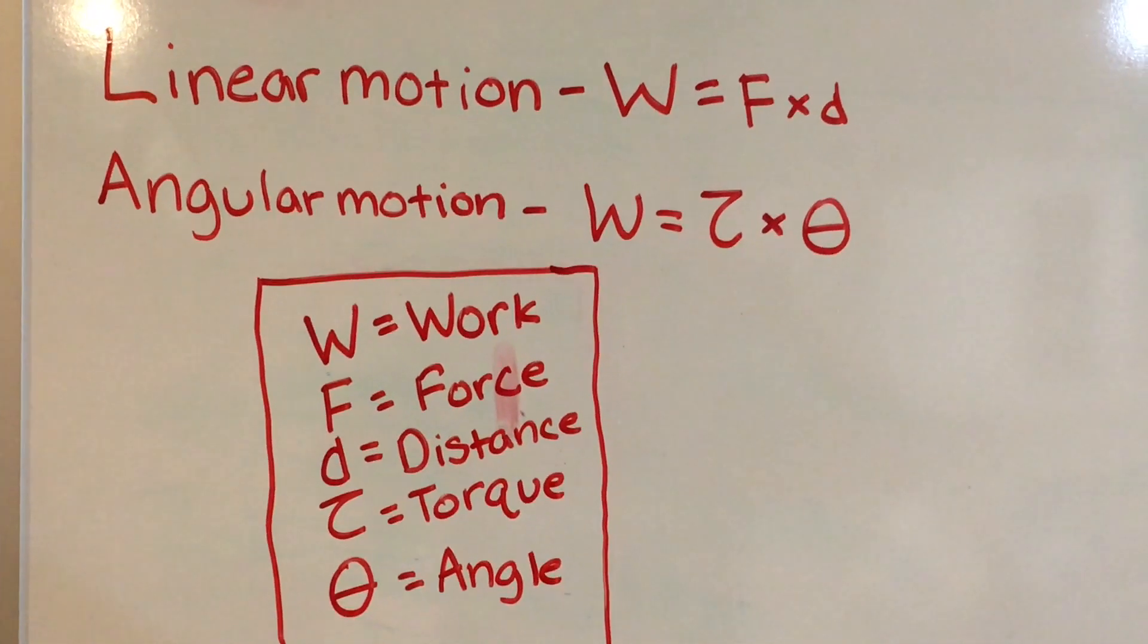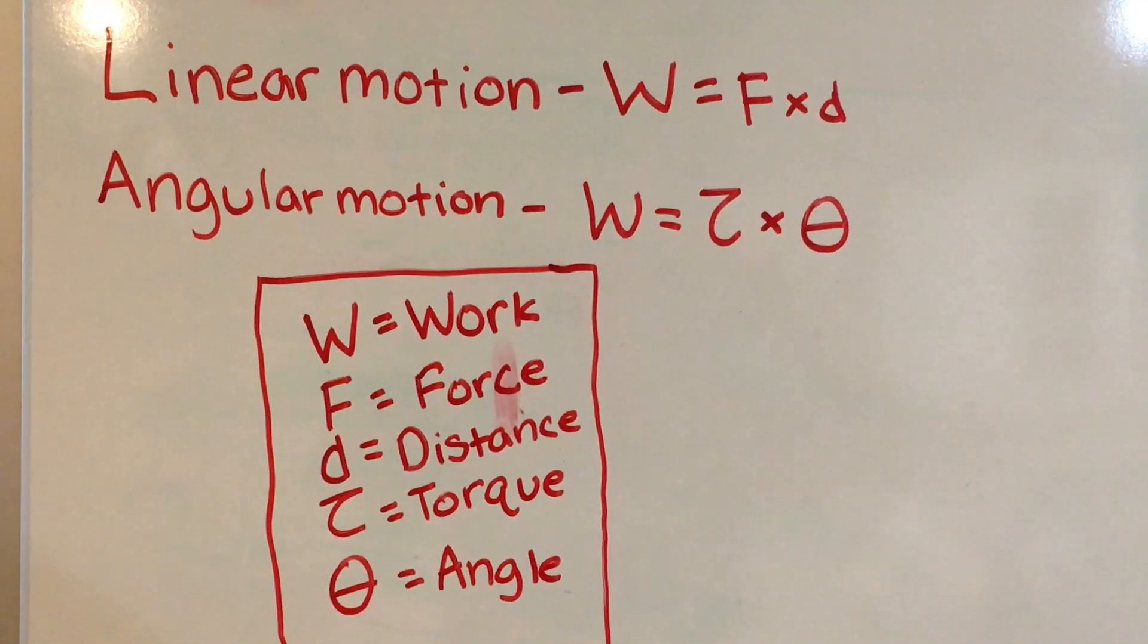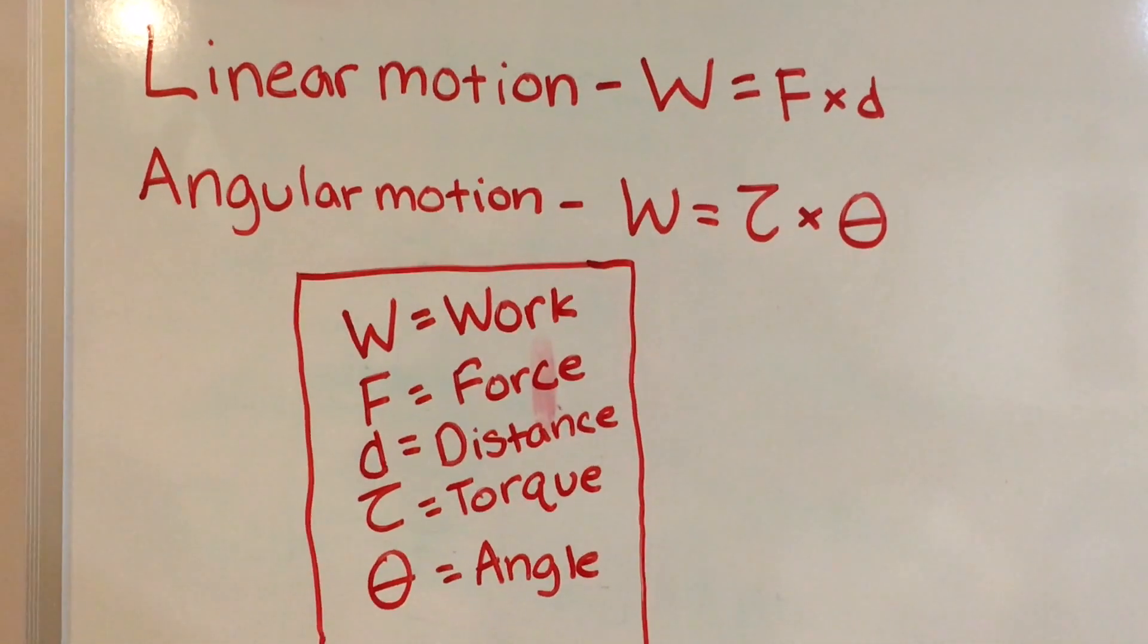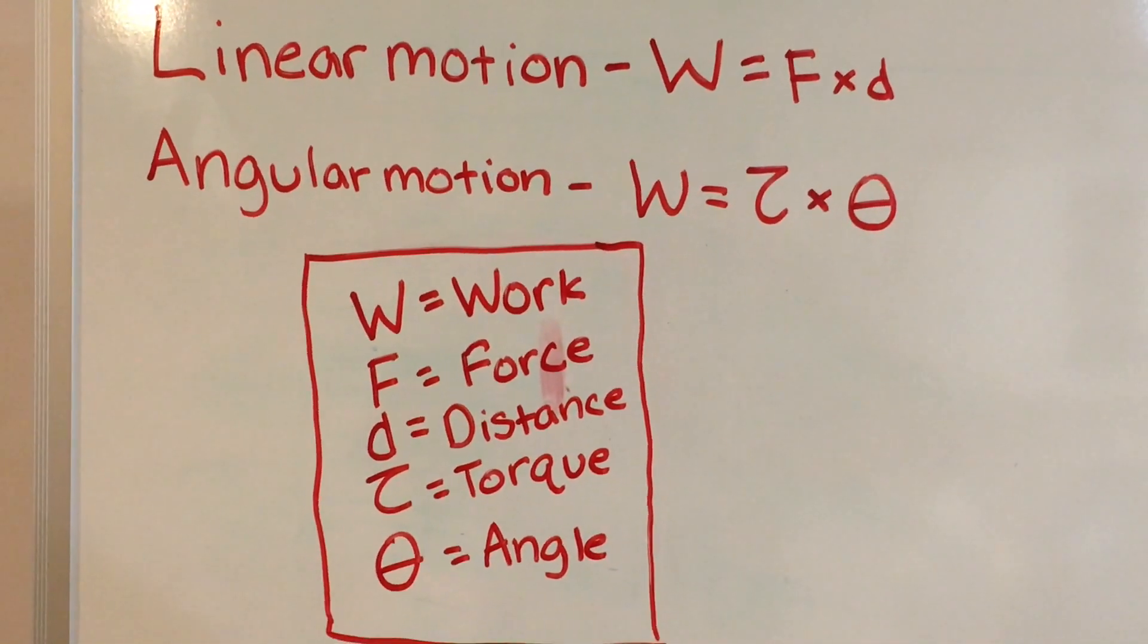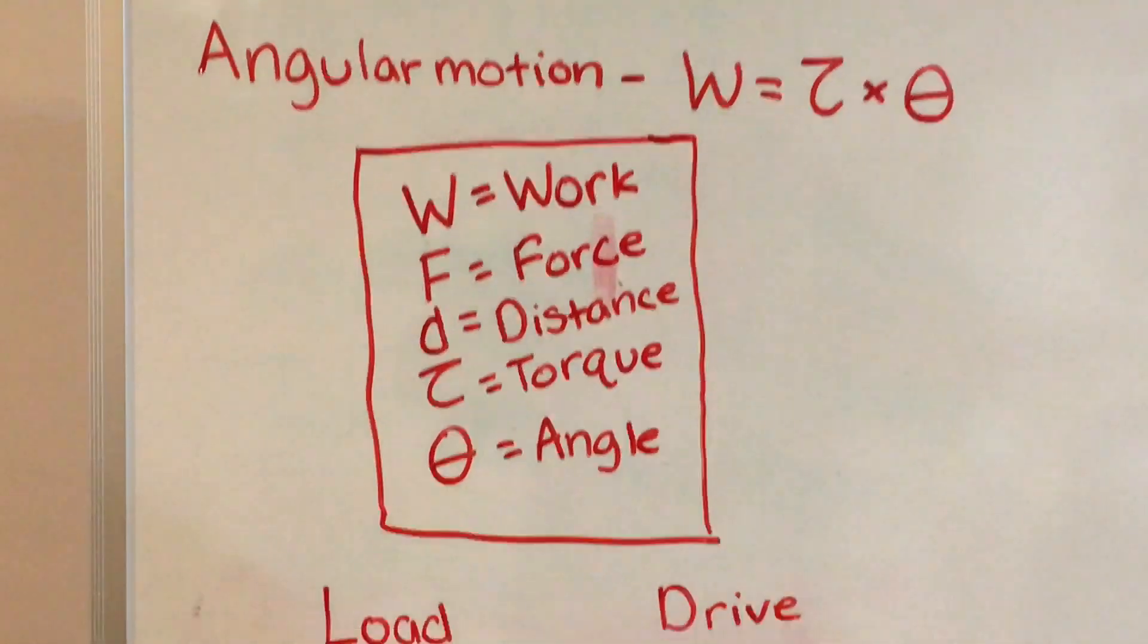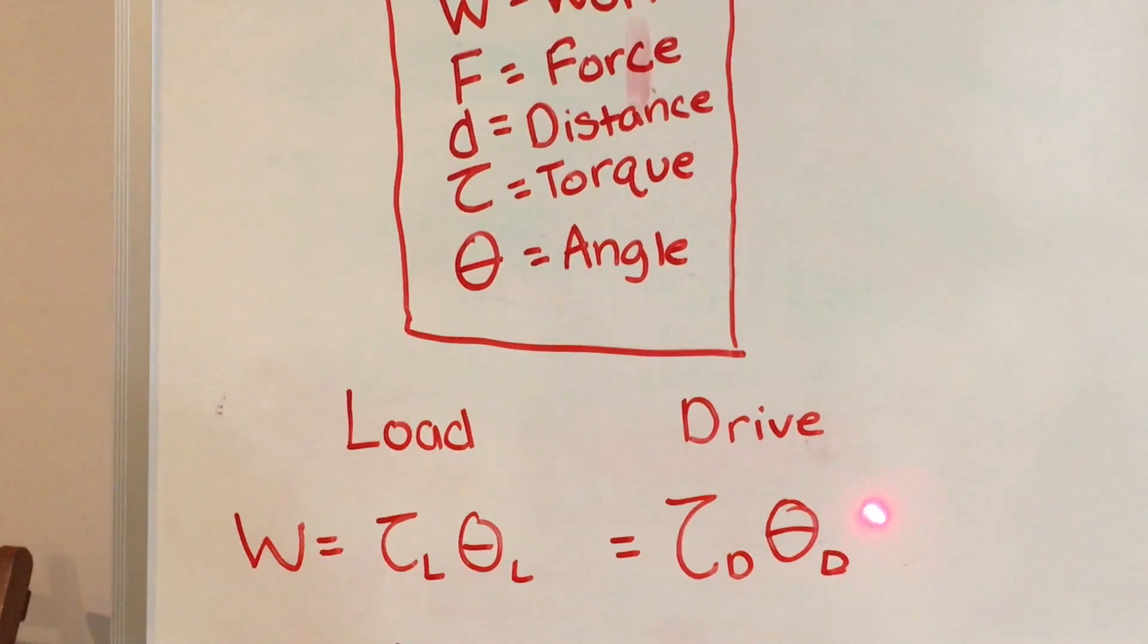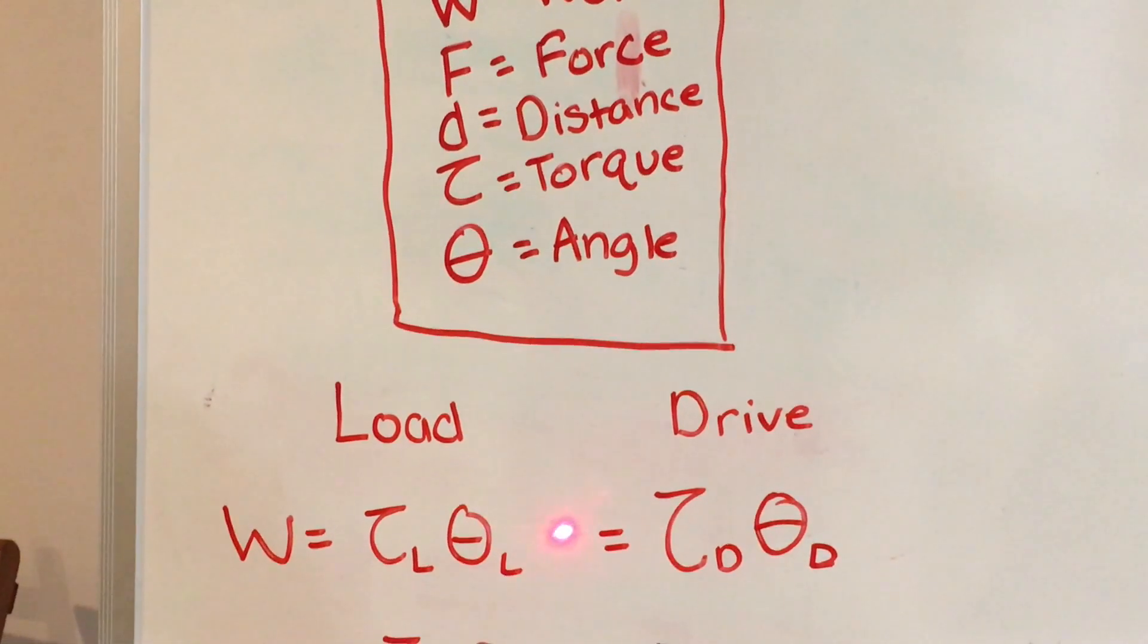Energy, as you may recall, is the capacity to do work, and it has the same units as work. The law of conservation of energy states that energy cannot be created or destroyed, which is why the energy supplied at the drive axle is the equivalent to the work done at the load axle.